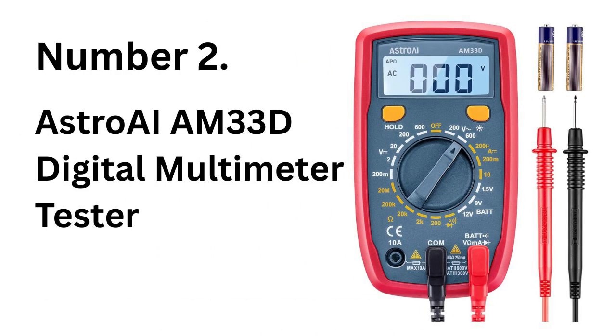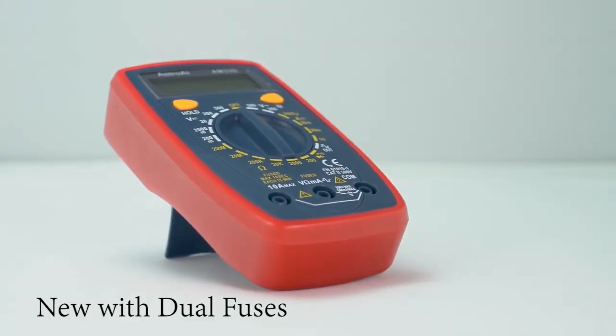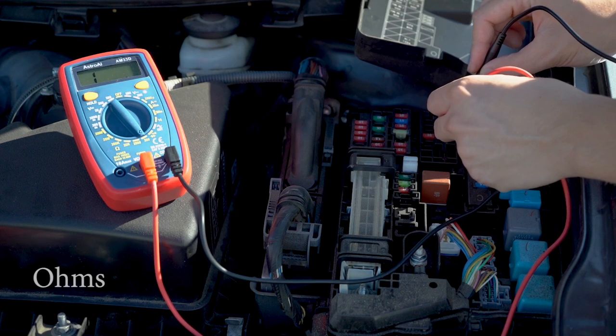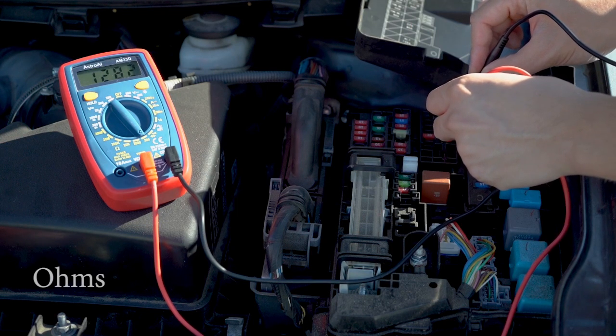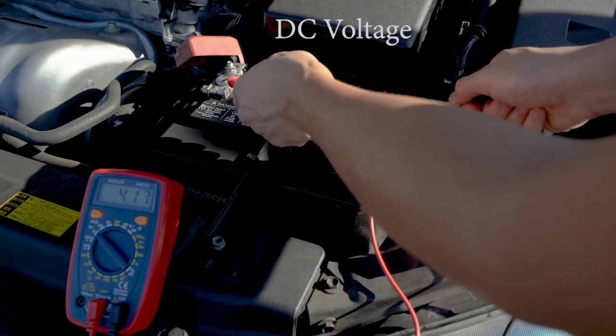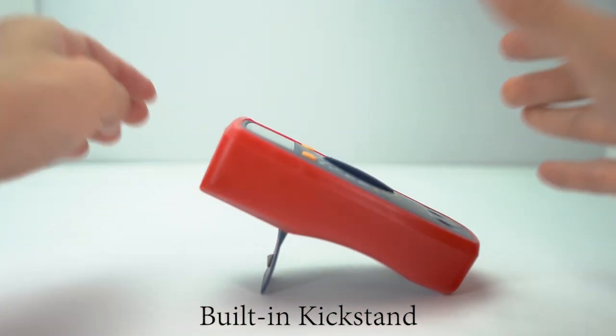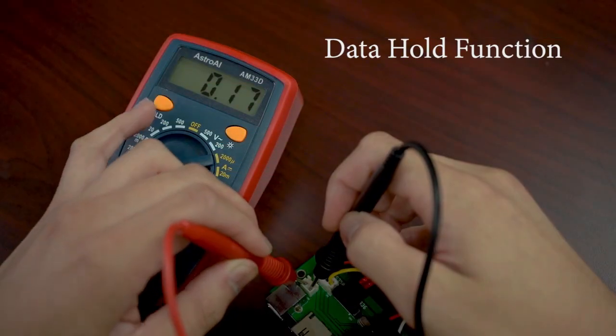Number 2. Astro AI M33D Digital Multimeter Tester. The Astro AI AM33D is a budget-friendly multimeter ideal for occasional electrical projects, offering basic functions like AC-DC voltage and current measurement, audible continuity check, and a square-wave generator. It includes simple probes, an integrated backlight, and a data hold function for added convenience.